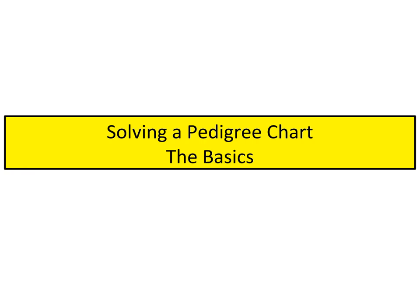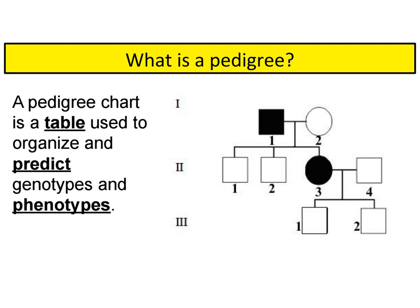Hello everyone. Today we're going to learn the basics of solving a pedigree chart. As we learn, we need to put a few things in our notes. The first is the definition of a pedigree chart. It is a table that's used to organize and predict genotypes and phenotypes, and the chart actually represents members of a family. In order to understand the symbols and the organization, we're going to watch a video by Mark Drolinger that's going to explain this to us.